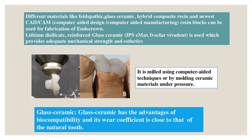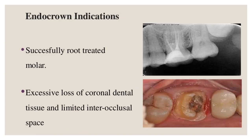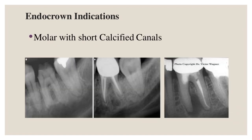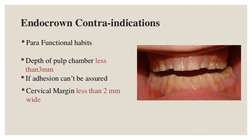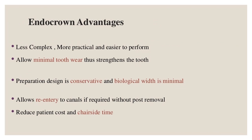Lithium disilicate reinforced glass ceramic (IPS e.max, Ivoclar Vivadent) is commonly used, providing adequate mechanical strength and aesthetics. Glass ceramic has the advantages of biocompatibility and a wear coefficient close to that of natural tooth. Endocrown indications: successfully root-treated molar, excessive loss of coronal dental tissue, limited interocclusal space, and molar with short calcified canals. Contraindications: parafunctional habits, pulp chamber depth less than 3 mm, inability to assure adhesion, and cervical margin less than 2 mm wide.